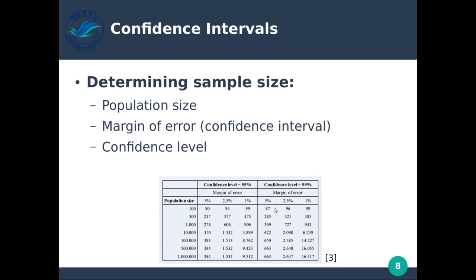If we look at confidence level 99% and margin of error 5%, we actually have almost double the number of samples needed compared to 95% confidence level. If we want a very low margin of error, we need a very large sample. Most surveys sampling entire populations are not looking for a 1% margin of error, so they don't sample nearly as many people — for example, 10,000 people for a population of 1 million.